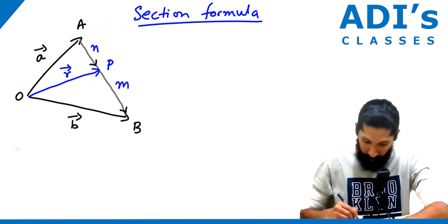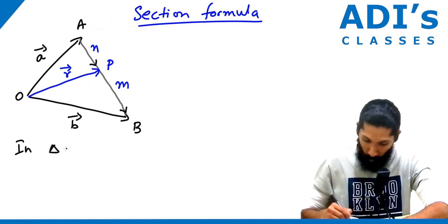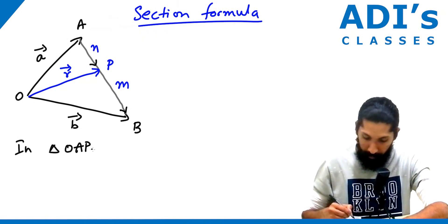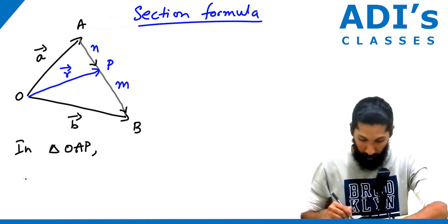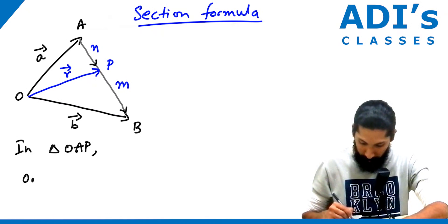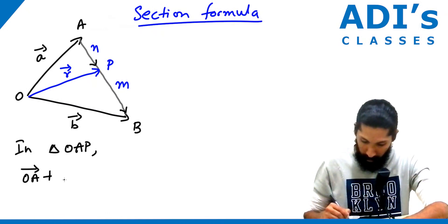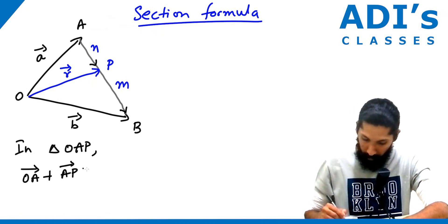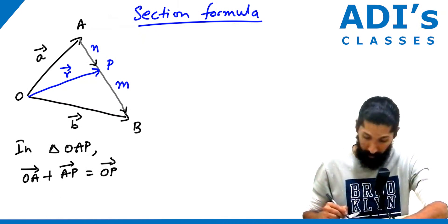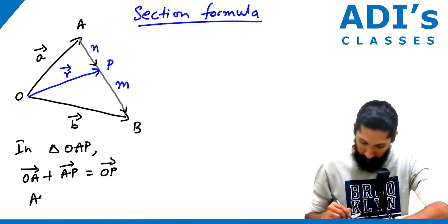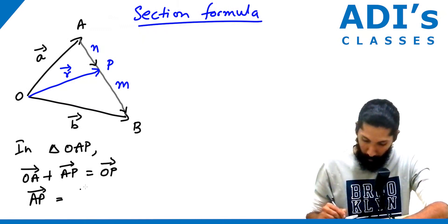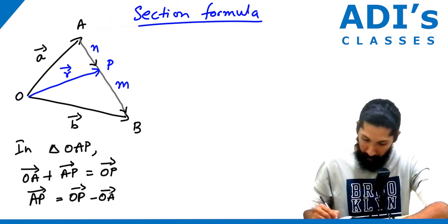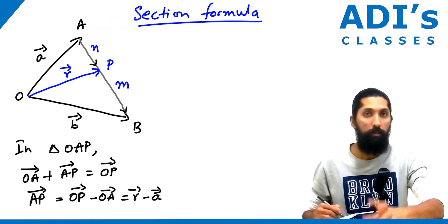For that, we'll take triangle OAP. Then we have OA plus AP equals OP. So what is AP distance? AP becomes OP minus OA, which is R minus A.